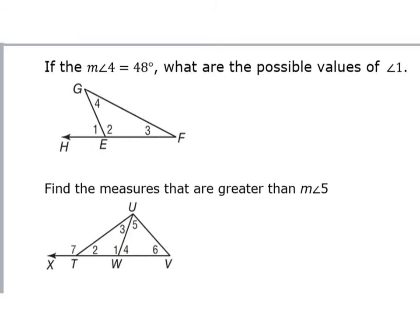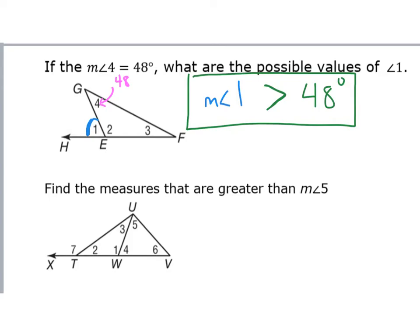If the measure of angle four is 48 degrees, what are the possible values of angle one? They gave me angle four, which is inside — it's a remote interior angle — and it's 48 degrees. I want to know what possible values there are for the outside. I know the measure of angle one has to be greater than either of the two interior angles, so angle one has to be greater than 48 degrees. We can also add that angle one has to be less than 180, because it takes angle one and angle two together to make a straight line — a linear pair. So angle one is between 48 degrees and 180 degrees.